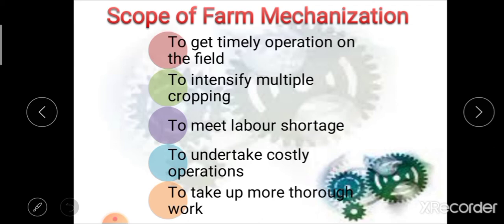The second scope is to intensify multiple cropping. Due to different machineries used in harvesting operations, use of suitable machines makes it possible to cultivate different types of crops or multiple crops on the field. The next scope is to meet labor shortage. In areas where agriculture is done around the year, there is lots of labor shortage, and use of machineries in those areas helps meet the labor shortage problem.